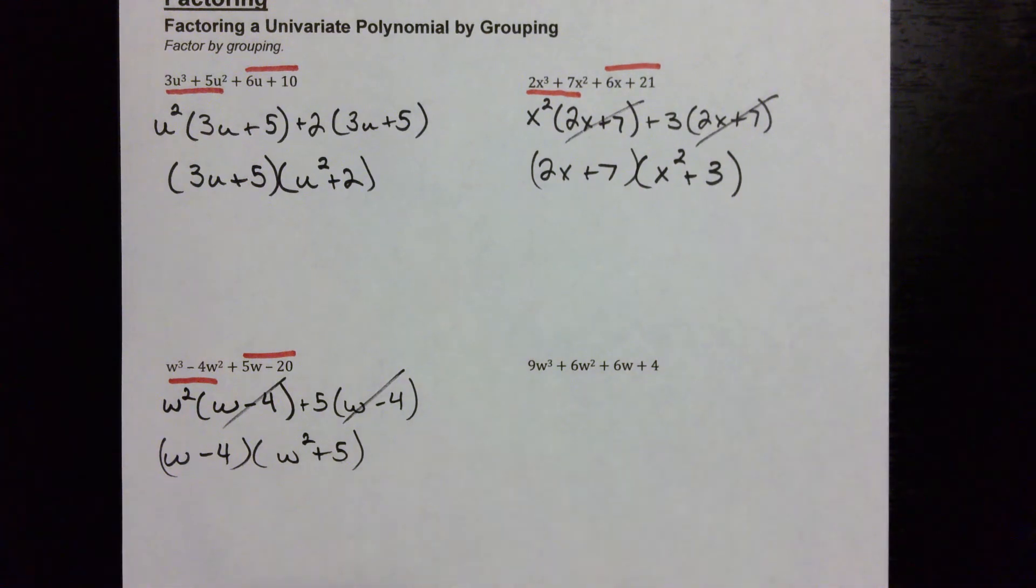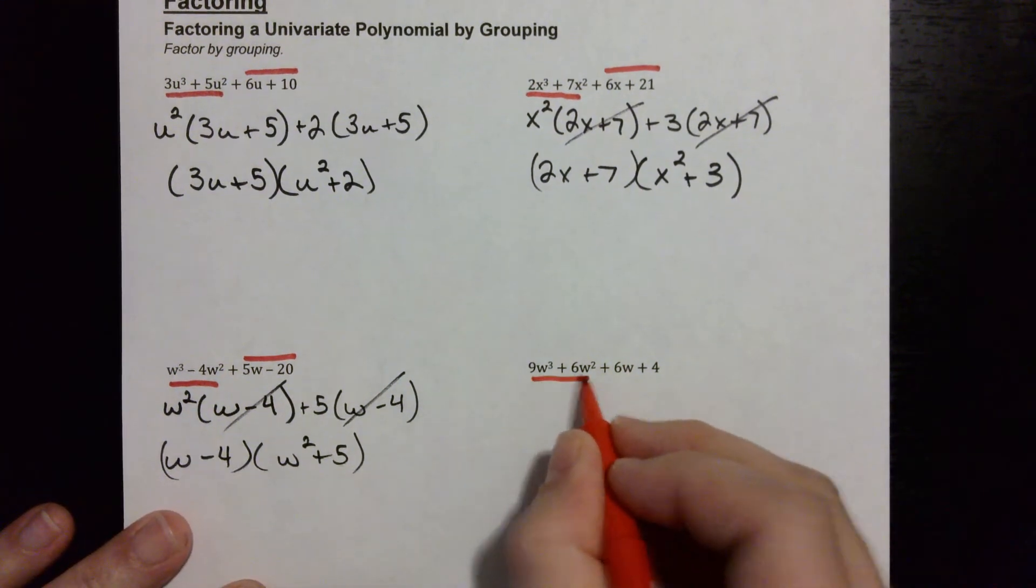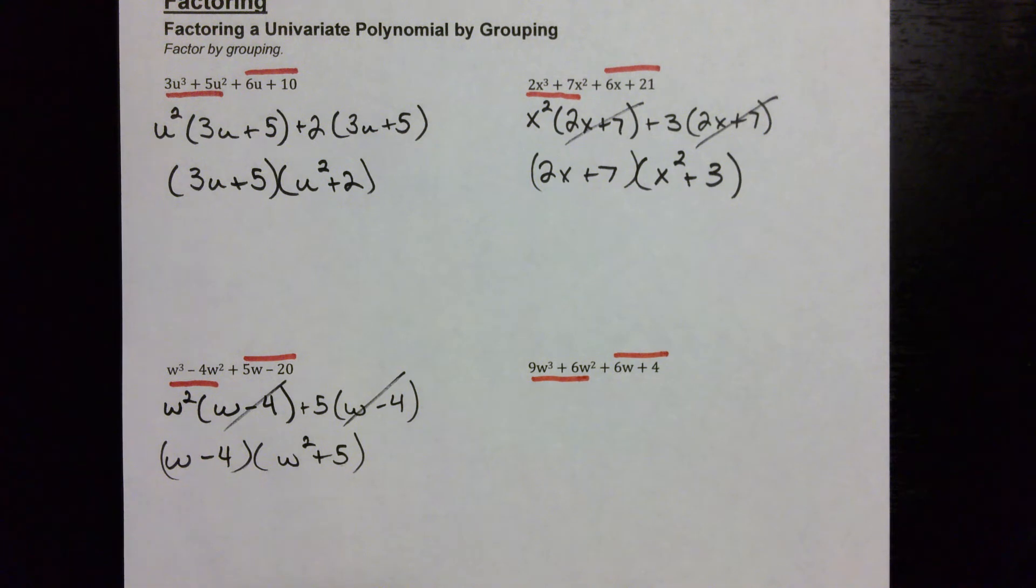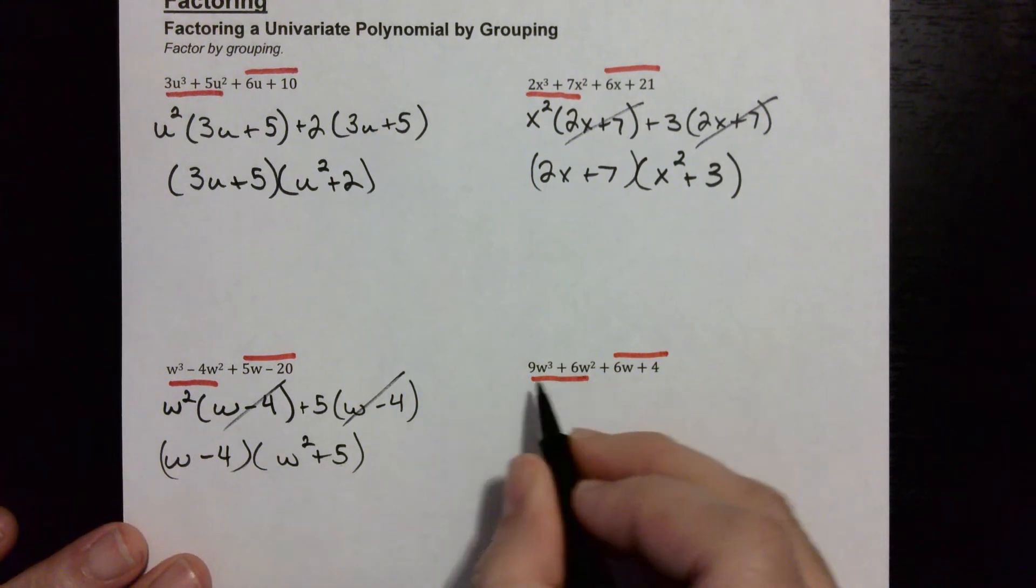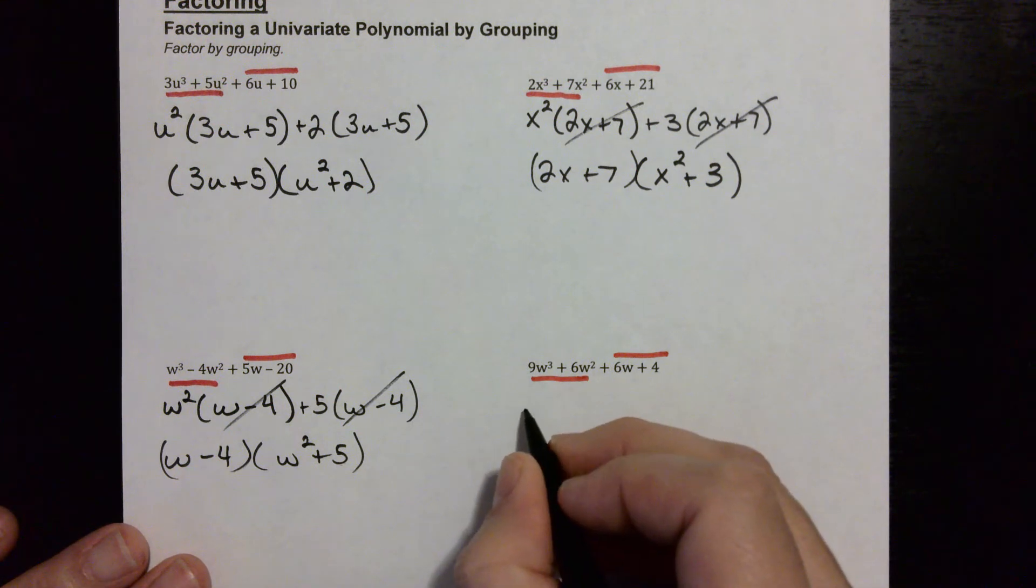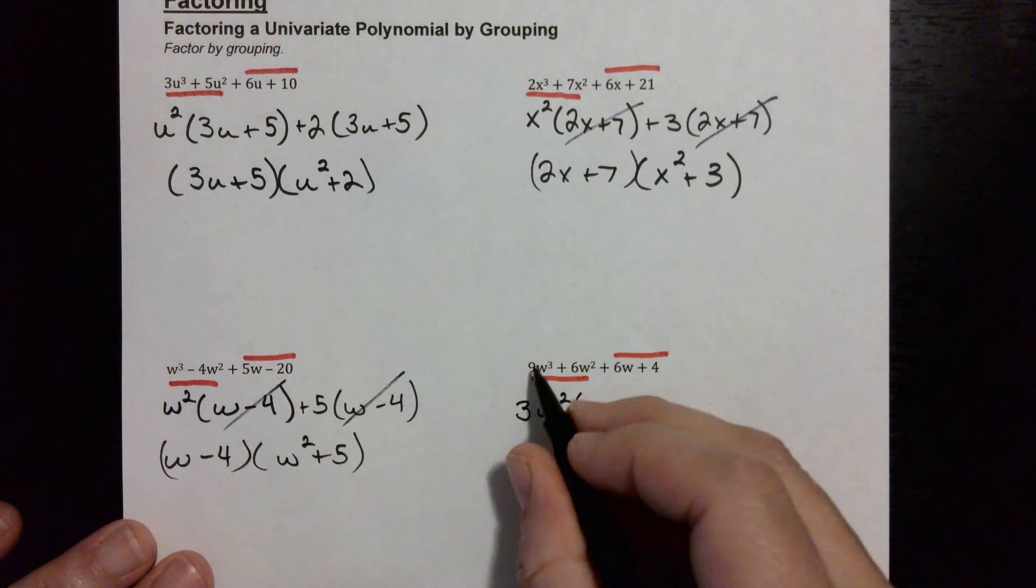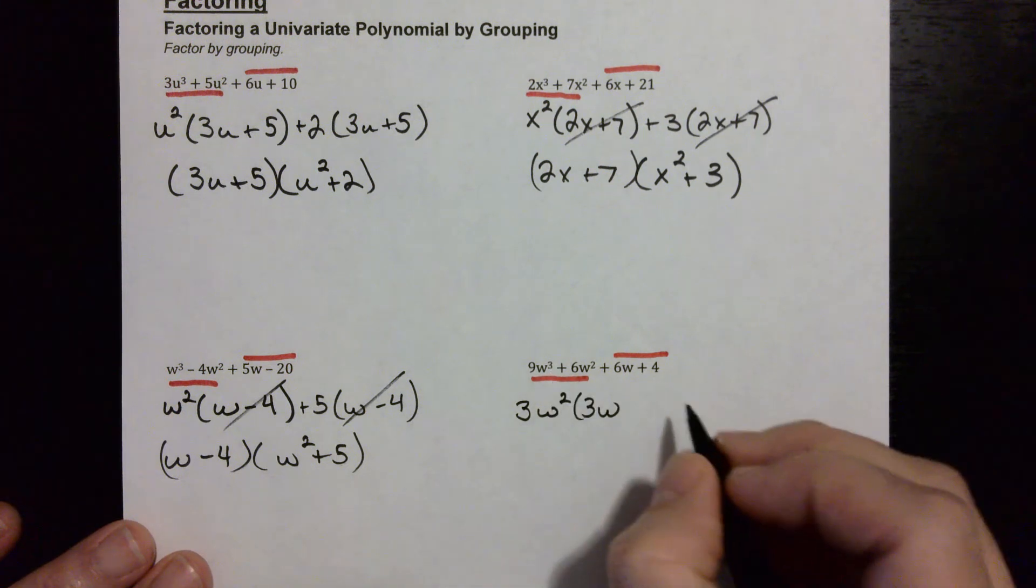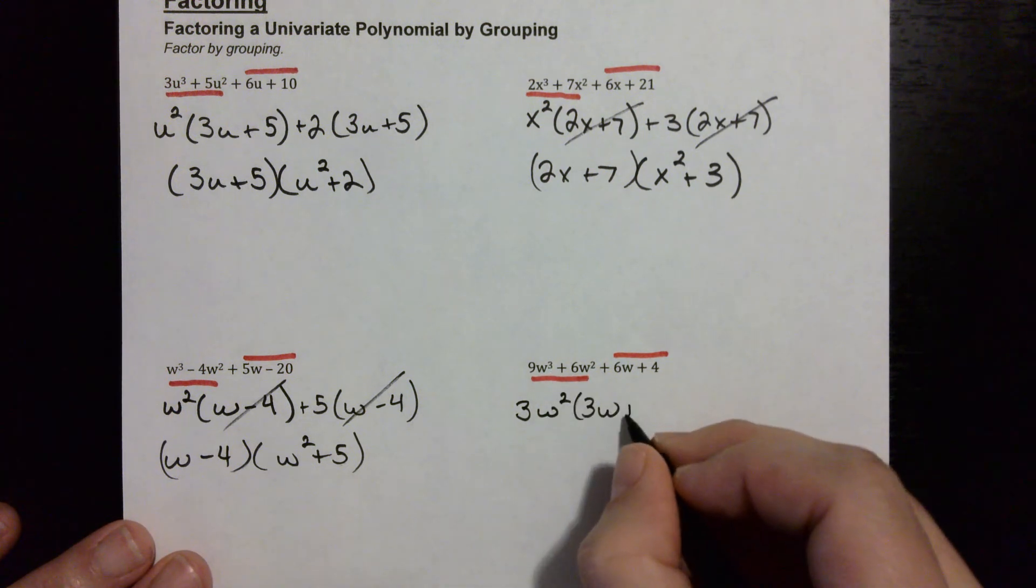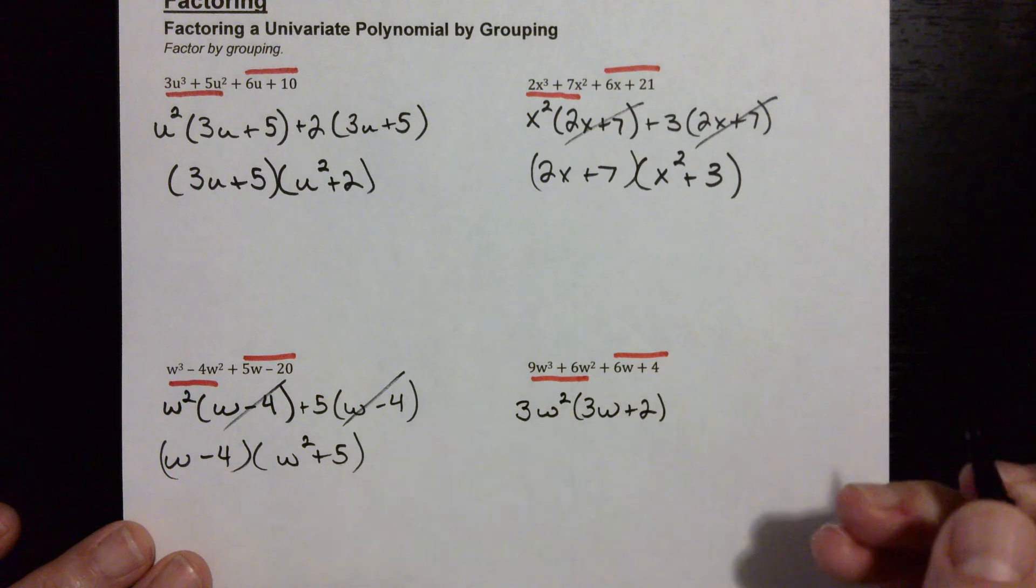One last problem. Let's look at this one. So the first two terms, looks like we can factor out a number this time. I think three goes into six and nine, and they both have at least a w squared to give, so three w squared. And that would leave three w, I'm dividing the nine w cubed by three w squared, and plus two. That's six w squared divided by three w squared.